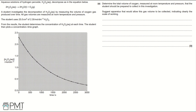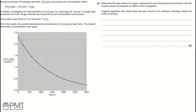Part A: Determine the total volume of oxygen measured at room temperature and pressure that the student should be prepared to collect in this investigation. Suggest apparatus that would allow this gas volume to be collected, indicating clearly the scale of working. Before we begin answering, there are a few key pieces of information in the question that we need to pay attention to and understand first.